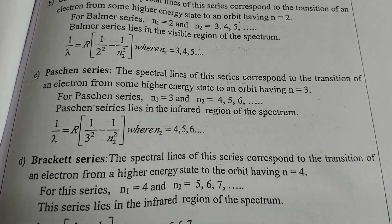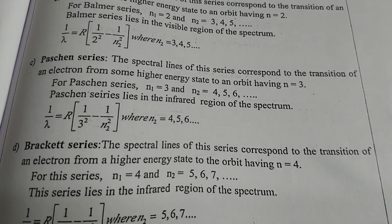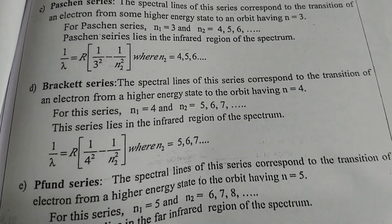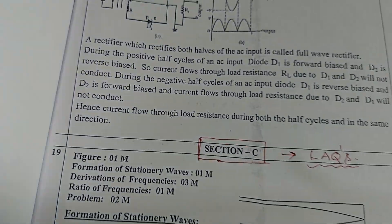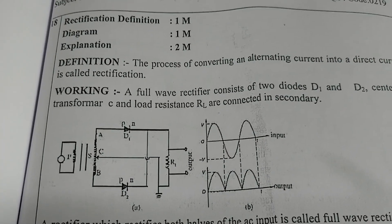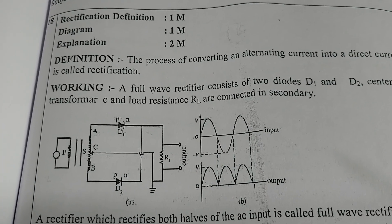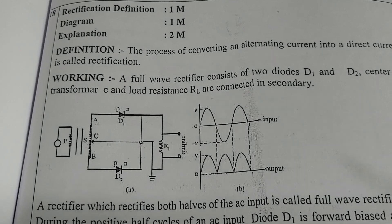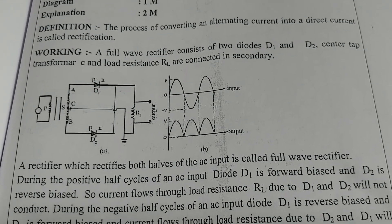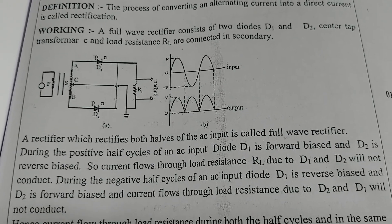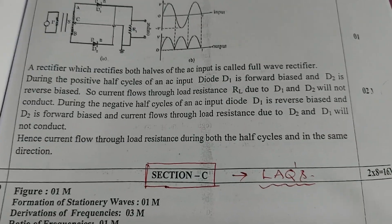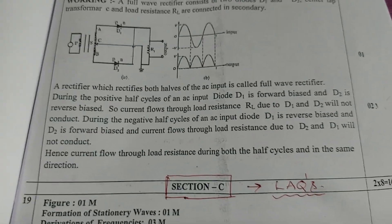The divisions here are A, B, C, D, E. Question number 18 — rectification: definition one mark, diagram one mark, explanation two marks. Are you following, students? Now Section C starts — the SAQ part is over.